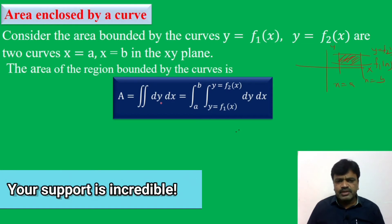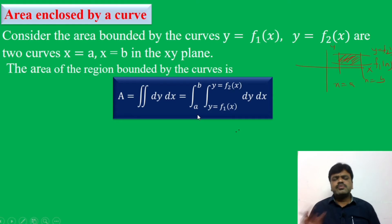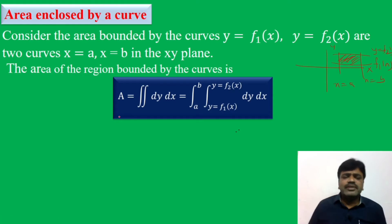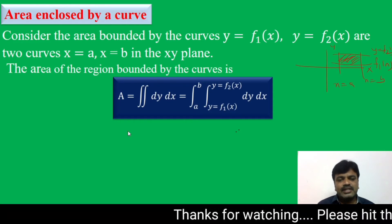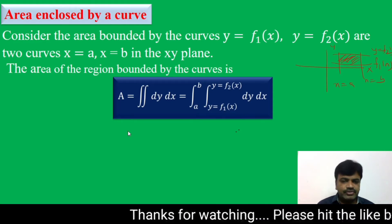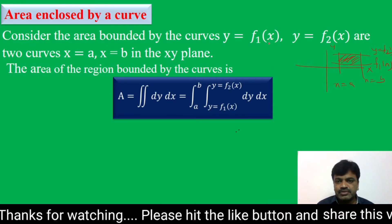The area formula is A equals the double integral dy dx. That is: A equals the integral from a to b, integral from y equals f1(x) to y equals f2(x), dy dx. Whenever you observe limits in terms of x, you write dy dx.